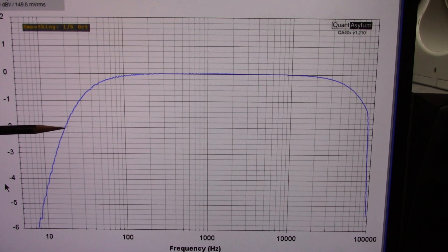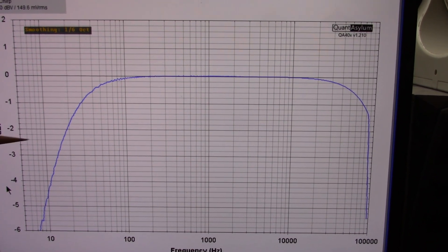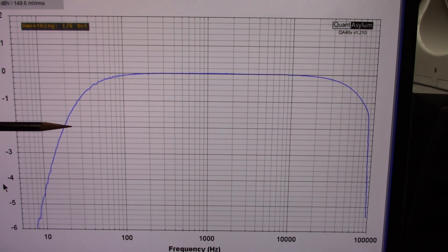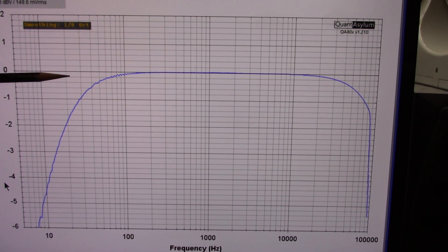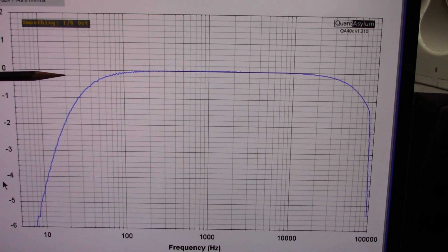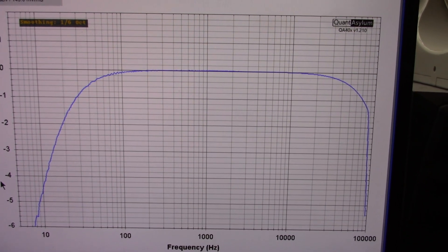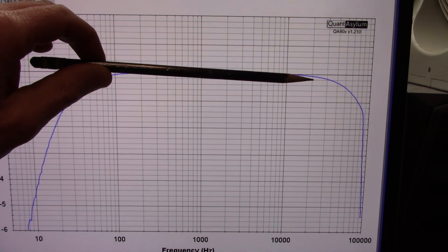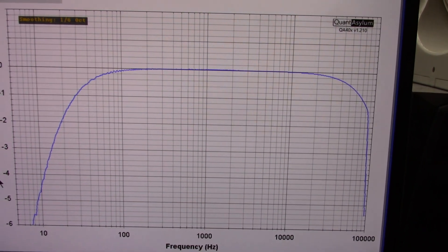Well at 20 hertz we're almost at minus 2 dB, which is not terrible but it's not really hi-fi. I want to see it less than minus 1 dB really. At 20 kilohertz it's fine. It's about one-tenth of a dB down.